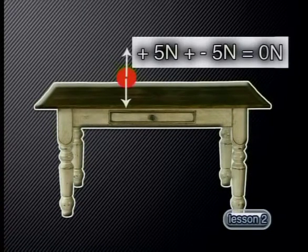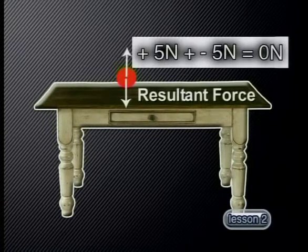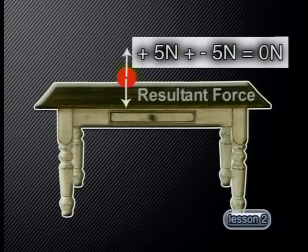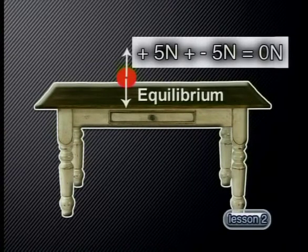We call the sum of all the forces acting on the body or object the resultant force. Notice that neither the shape nor the motion of the book changes as a result of these forces. We say the forces acting on the book are in equilibrium.